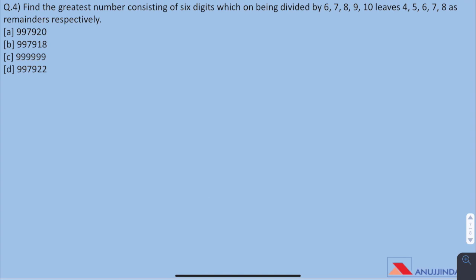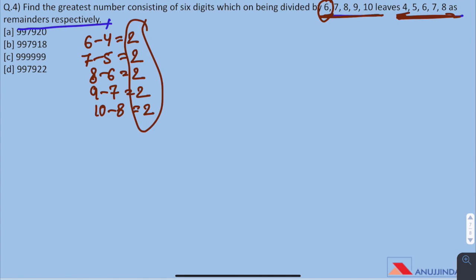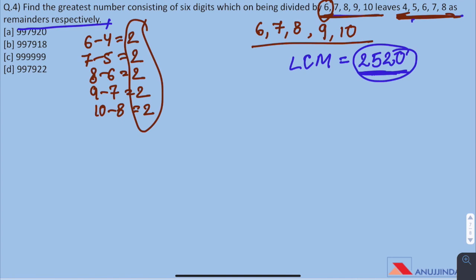Question 4: Find the greatest number consisting of 6 digits which on being divided by 6, 7, 8, 9, 10 leaves 4, 5, 6, 7, 8 as remainders respectively. There are two types of problems involving remainders. One, in which the remainder of all the given numbers is same like the problem we have solved, and second one in which the remainder of every number is different. In such cases, what we do, we minus the remainder from the number itself. 6 minus 4 gives us 2, 7 minus 5 gives us 2, 8 minus 6, 9 minus 7, 10 minus 8 and here we see that 2 is the common number which we get when we minus the remainder from the number itself. As we have to find the greatest six digit number divisible by LCM of these five numbers, LCM is 2520.